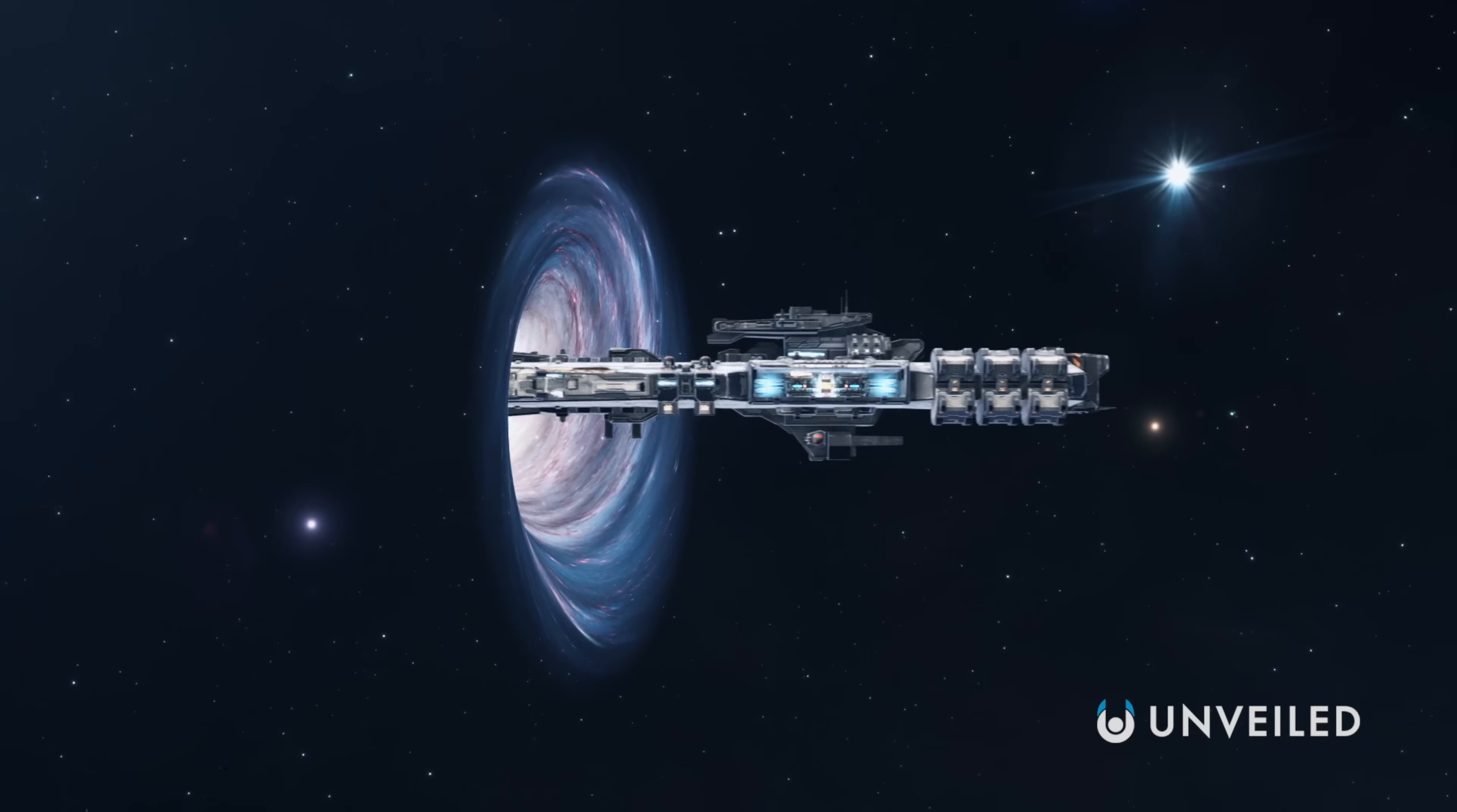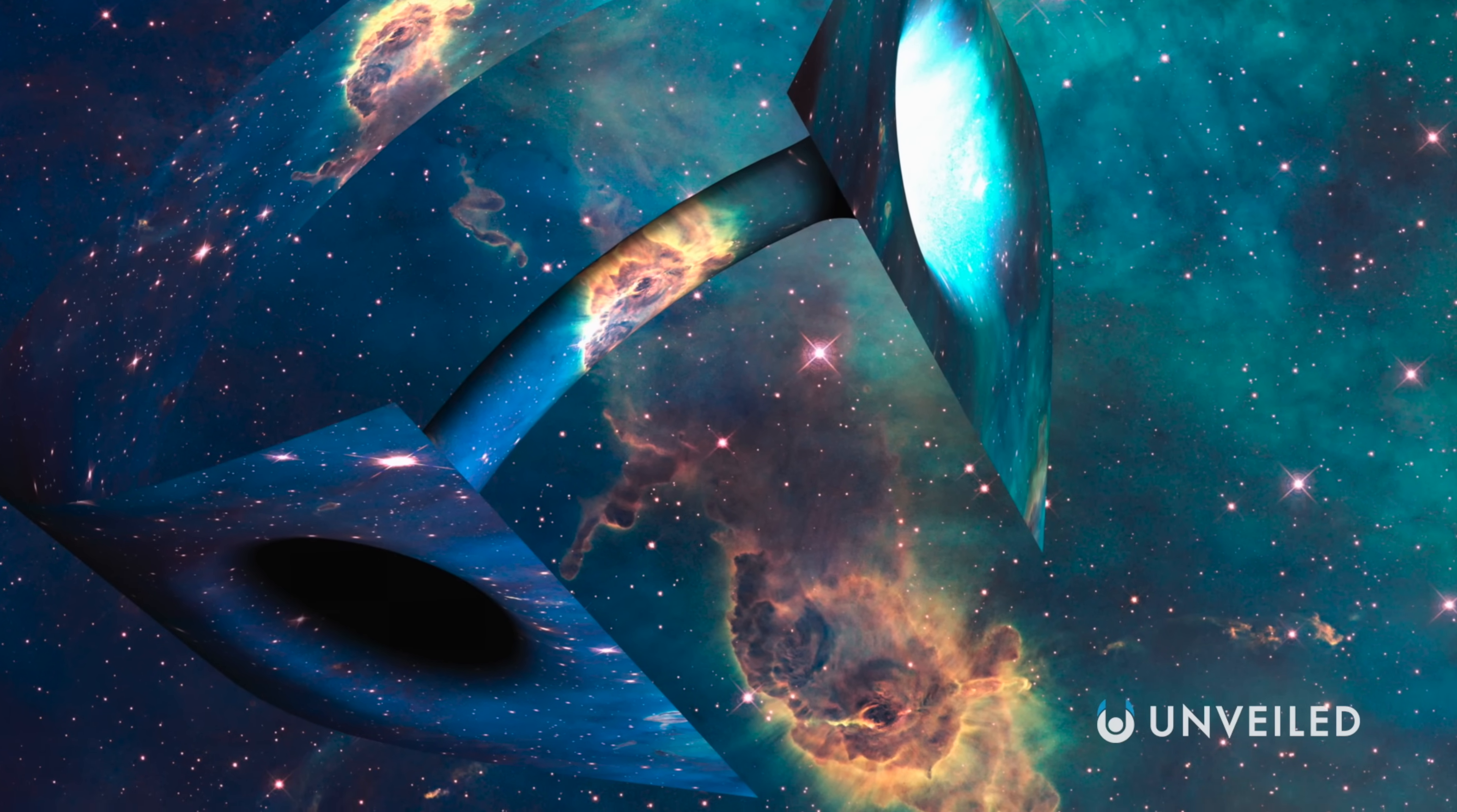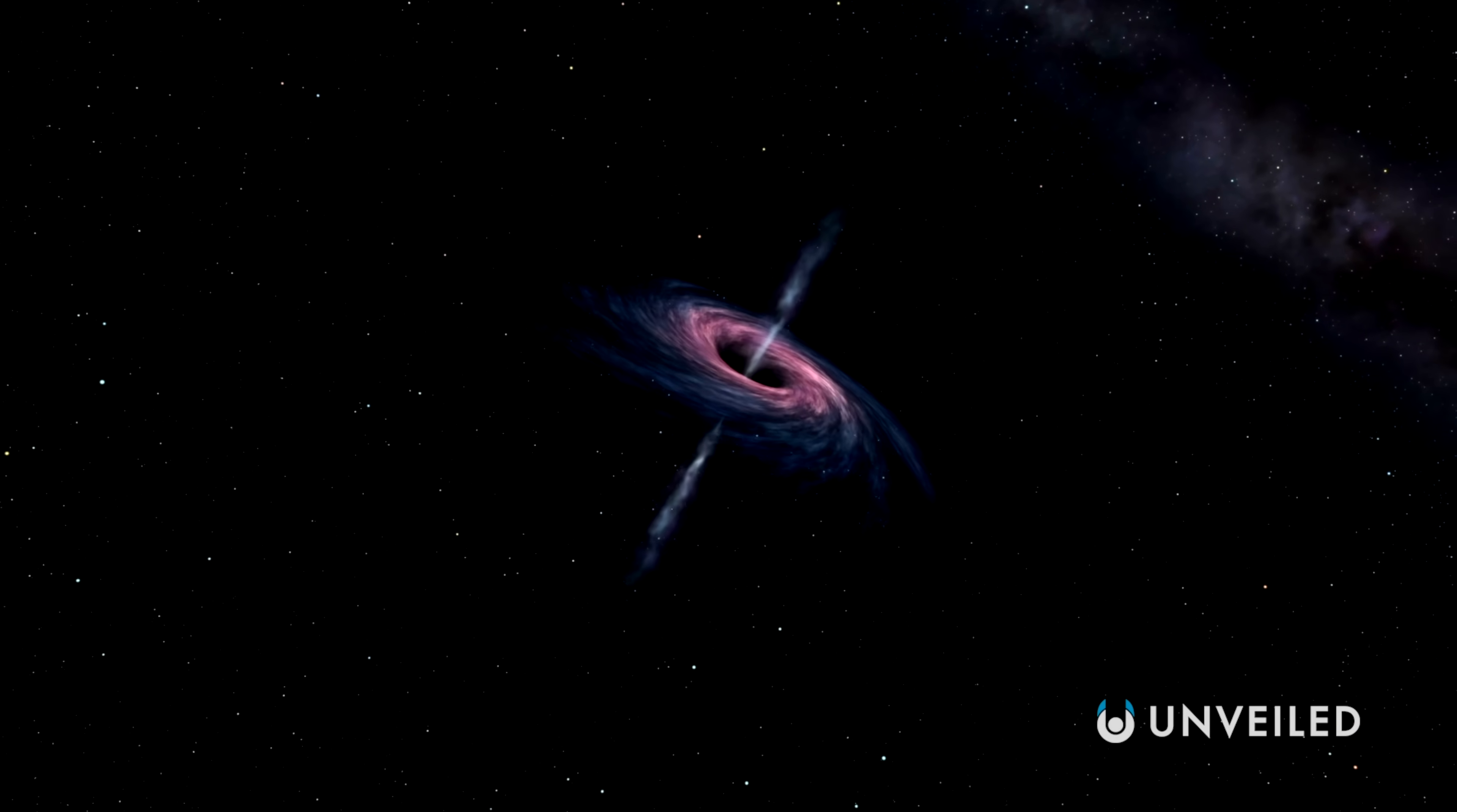More directly, the Einstein-Rosen bridge is a specific type of wormhole that also works as a shortcut through the fabric of space. In general, it's said that that fabric, otherwise known as spacetime, could be manipulated so that two points even light years away could be brought together. It's often demonstrated by marking two points on a piece of paper, folding that paper in half so that the points match, and piercing a pencil through both. In a pretty primitive sense, that's a wormhole.